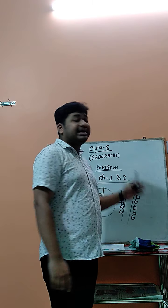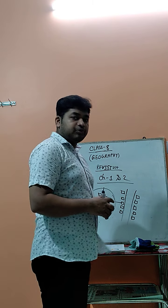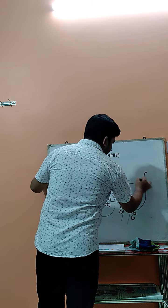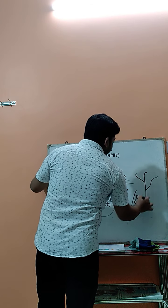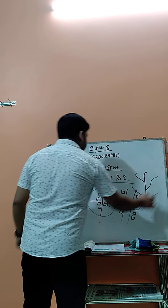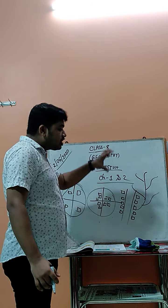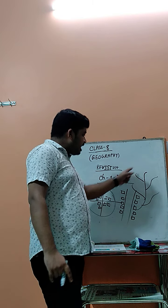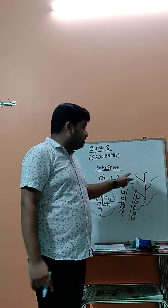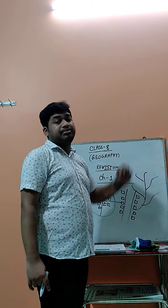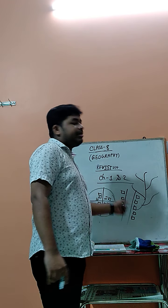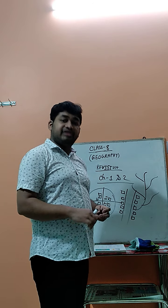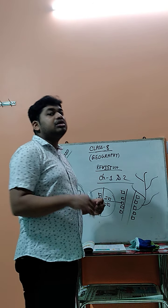The first is the dendritic type of drainage pattern. When the other rivers branch out from the main river and it looks like the branches of a tree — when small rivers come out from the main river in this tree-branch pattern — this type of river pattern is known as the dendritic type of drainage pattern.